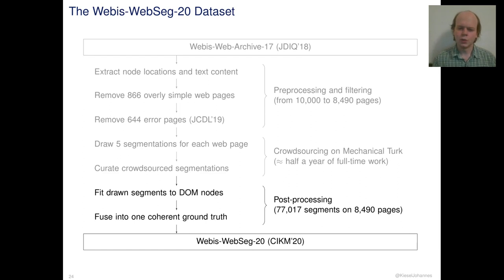After the crowdsourcing, we then fitted the segments, as they were drawn freehand, to the DOM nodes in order to remove the inaccuracies inherent in freehand drawing. Finally, the five segmentations of the five annotators per page were fused into a single ground-truth segmentation per page. For this, we used standard hierarchical clustering. As a similarity measure of the clustering of elements, we employed the number of annotators that put the elements into the same segment.